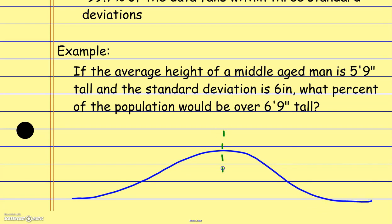We start with the mean at the very center. The mean here is five feet nine inches tall. Since we have two different units, we'll convert that to just inches — so that's 69 inches. The standard deviation is six inches. So spreading out from the mean, going six inches in each direction: to the right that would be 75 inches, and to the left that would be 63 inches.